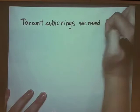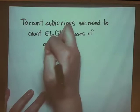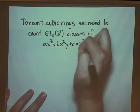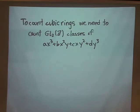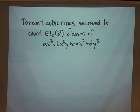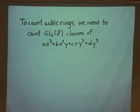To count cubic rings, we need to count GL2Z classes of binary cubic forms — forms with four integers A, B, C, D — where the GL2Z classes are given by an action almost like acting on X and Y. We want to count these up to discriminant X asymptotically in X. The discriminant of such a binary cubic form is very close to the formula for the discriminant of a cubic polynomial; it's homogeneous using the leading coefficient and so forth.